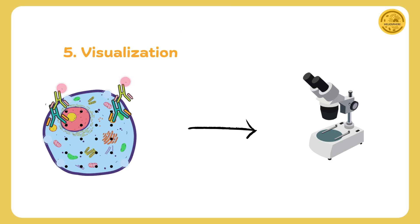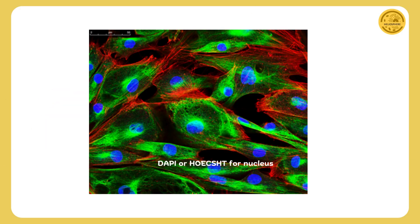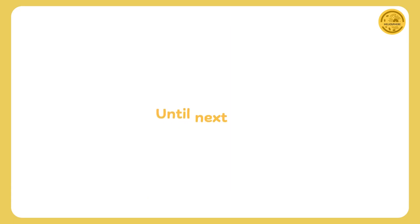Finally, we visualize the results using a fluorescence microscope or confocal microscope. The fluorescent dyes on the secondary antibodies light up, revealing the precise locations of the target proteins within the cell. It's like turning on a spotlight to highlight the details we are interested in. This is how it looks under the fluorescence or confocal microscope.